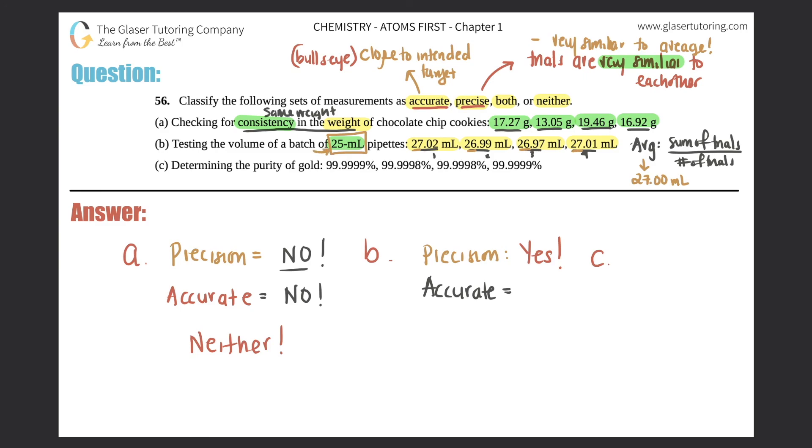But we were trying to test the volume of 25 mL pipettes. So was this accurate? No, because it wasn't close to the intended target. So in this case, you are only precise. This one would just be precise. This one was neither. So that answer is a and b. Now let's do c.